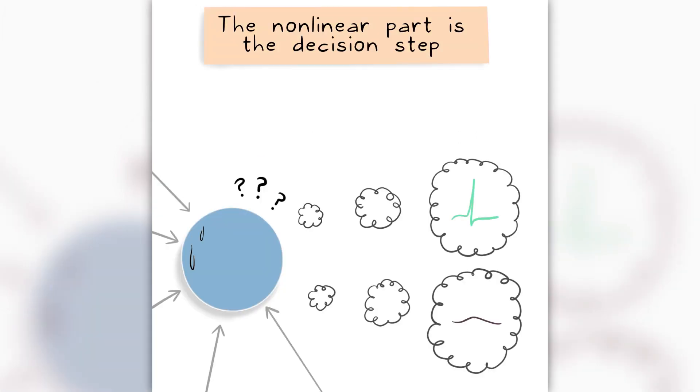The non-linear part is the decision step. Based on the number from the linear step, the node decides, blips, no blips.